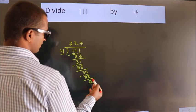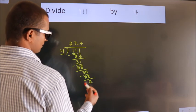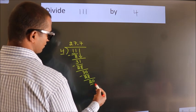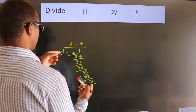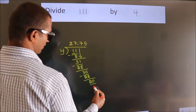After this, we already have the decimal. So directly take 0. So 20. When do we get 20 in the 4 table? 4 times 5 equals 20.